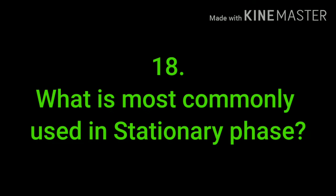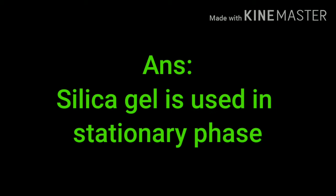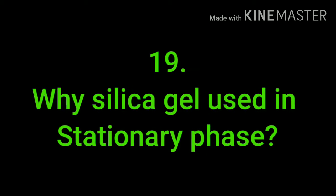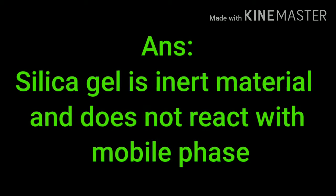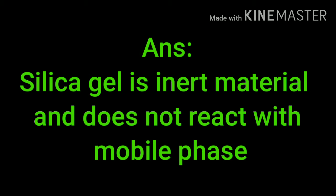What is most commonly used stationary phase? Silica gel is most commonly used stationary phase. Why is silica gel used in the stationary phase? Silica gel is inert material and does not react with the mobile phase. That's the reason silica gel is used.